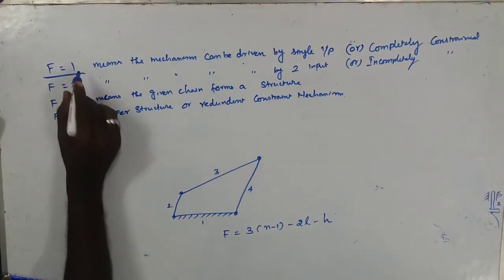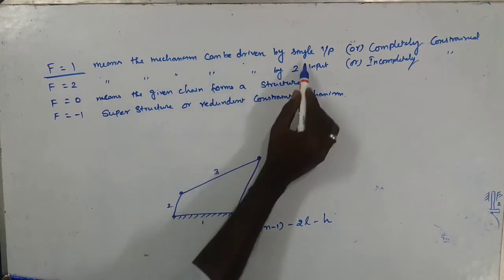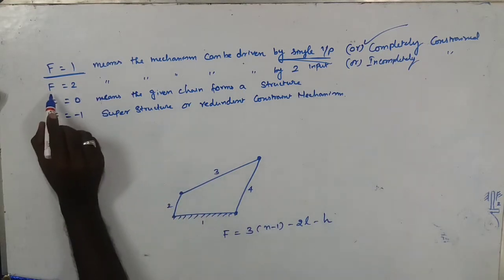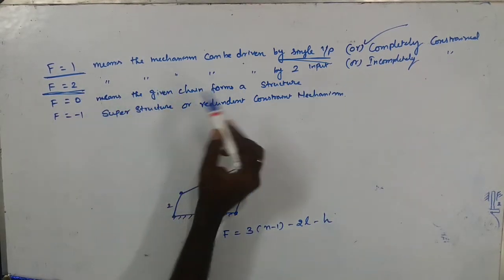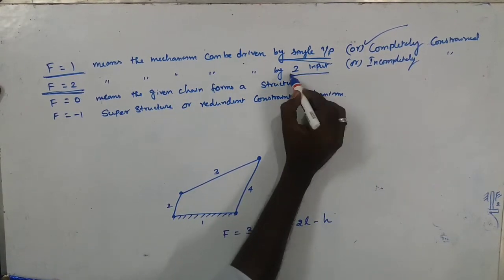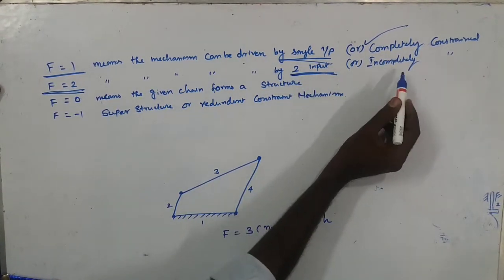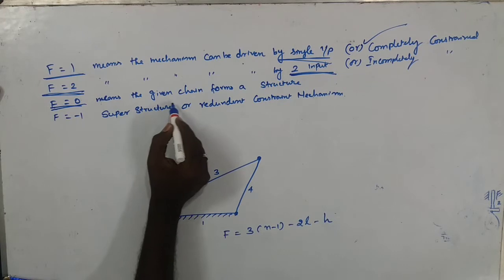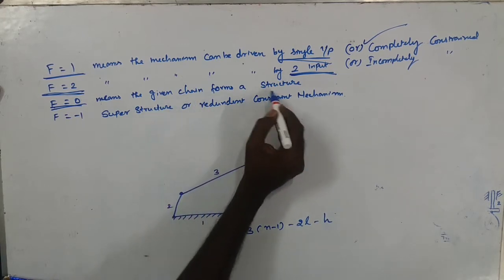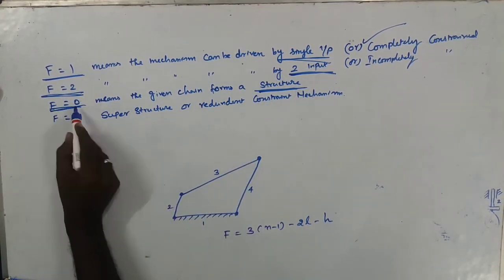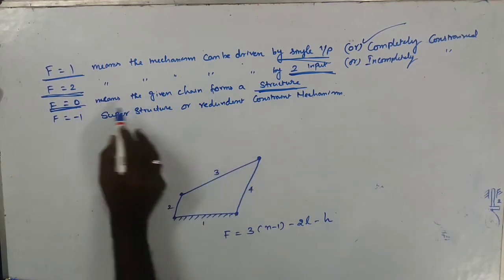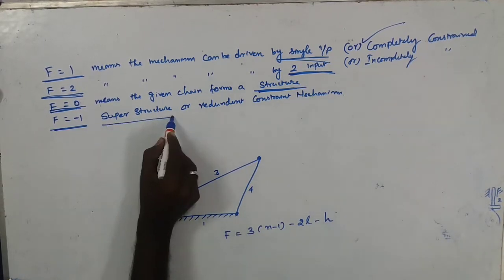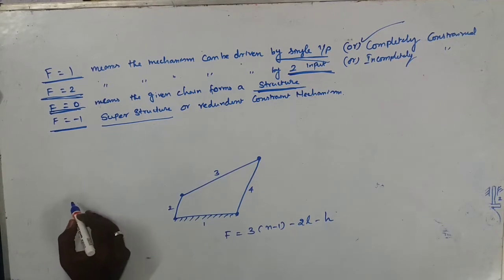If F equals 1, the mechanism can be driven by a single input — it is completely constrained. If F equals 2, the mechanism needs two inputs and is incompletely constrained. If F equals 0, the chain forms a structure with no movement. If F equals -1, it is a super-structure or redundant constrained chain.